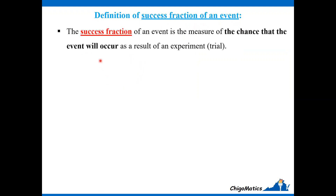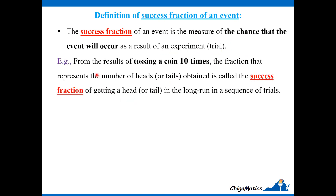We also define the term success fraction of an event, still using the same example. The success fraction of an event is the measure of the chance that the event will occur as a result of an experiment or trial. From the result of tossing a coin 10 times, the fraction that represents the number of heads or tails obtained is called the success fraction of getting a head or a tail in a sequence of trials.